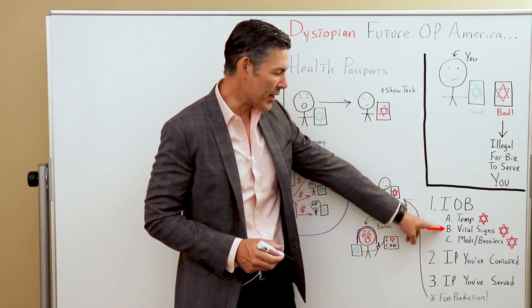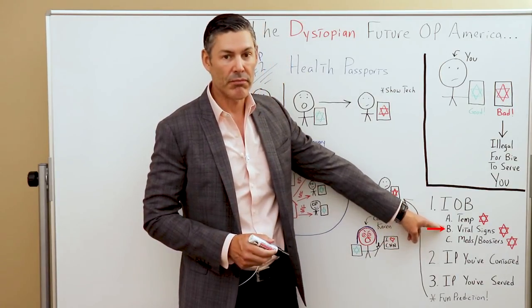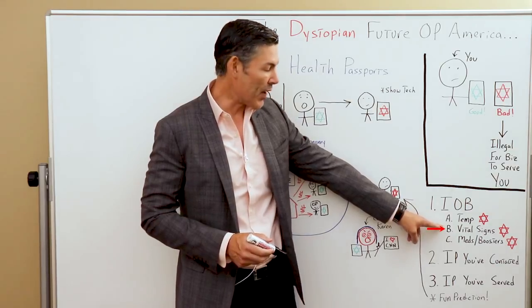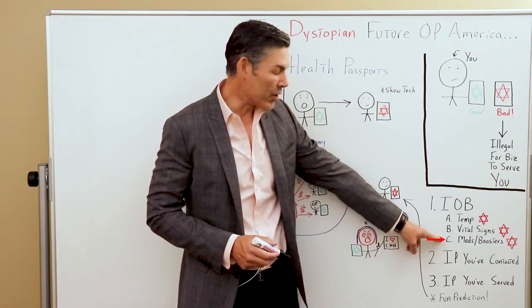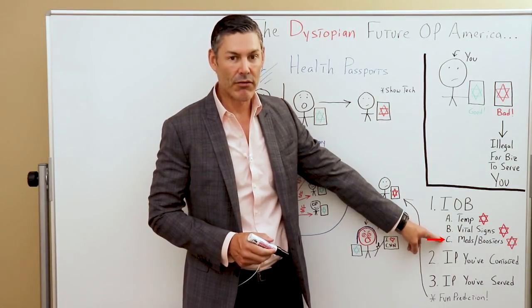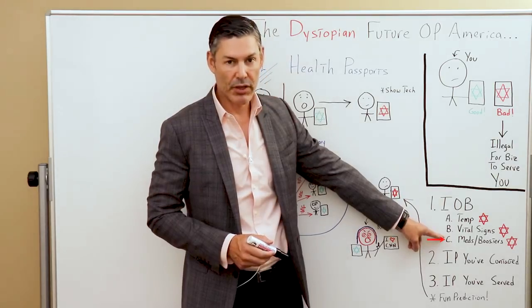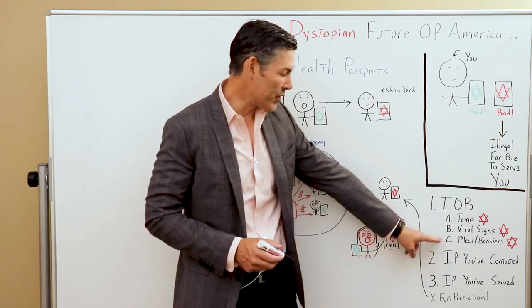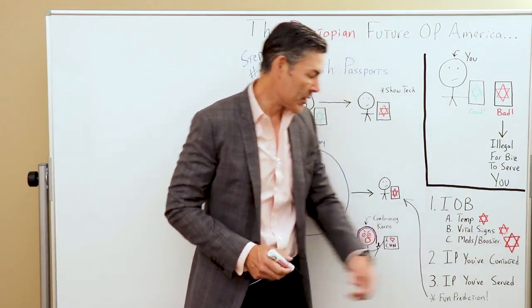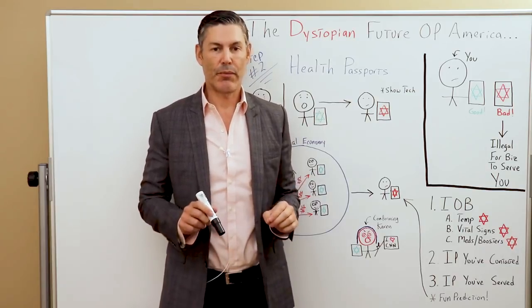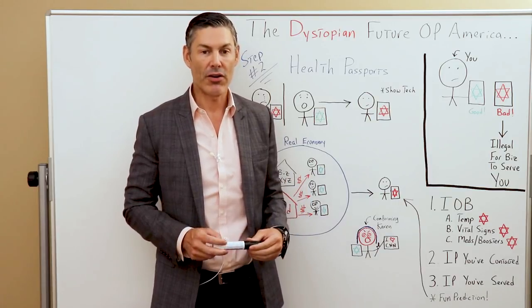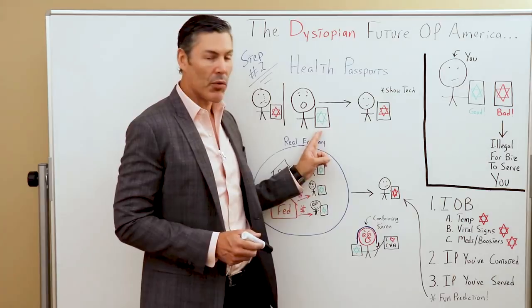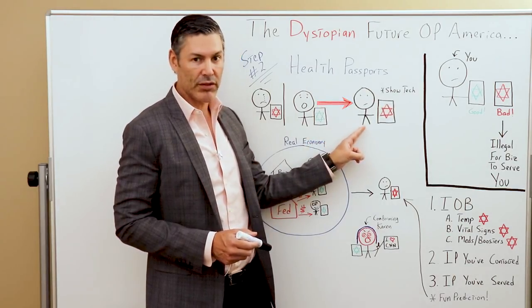It would also be able to determine your vital signs — so this could be a predictive measure to determine whether or not you have the sickness. If your vital signs aren't looking good, it's going to be a red star. Also, it'll determine whether or not you have the approved up-to-date meds from the government, including your boosters. If you're not up-to-date on those mandated booster shots, again, that's going to be a red star. But let's think this through: if we're dividing the population between red stars and green stars, what's going to happen when someone with a green star interacts with someone with a red star?